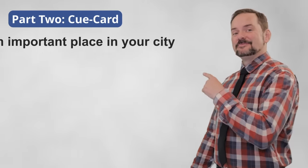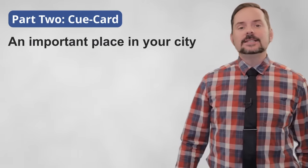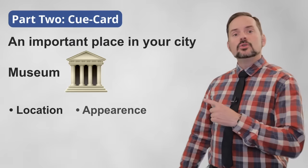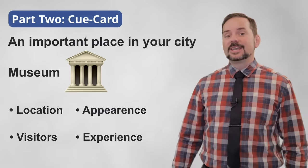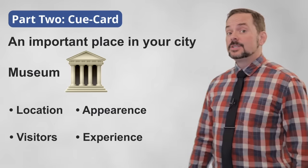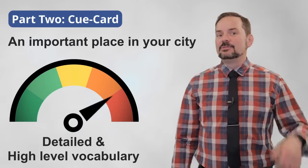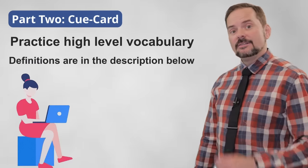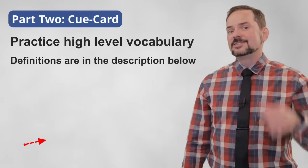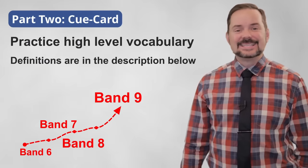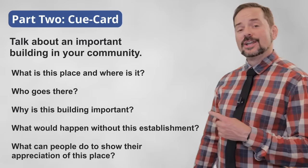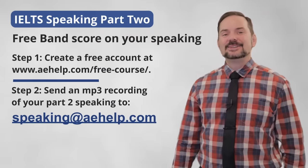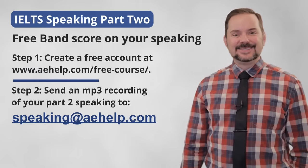For this cue card — talking about an important place in your city — this candidate wisely chooses to talk about the state museum. She knows lots of information about it: where it's located, what it looks like, who goes there, and what kind of experience a person can have visiting. Importantly, she uses a broad range of detailed and high-level vocabulary. You too must practice understanding this kind of vocabulary. Check the definitions in the video description below to get a high band score when asked to talk about an important place in your city. Try answering this cue card and send us your response in mp3 format to receive a band score estimate for free.